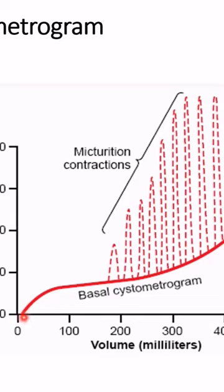If you observe, you will see that there are three components to this basal cystometrogram. One is this initial bit here where the increase in volume led to some increase in the inside pressure.